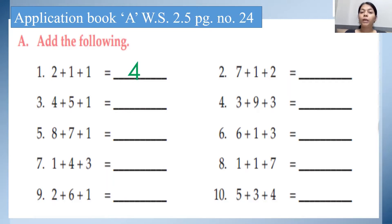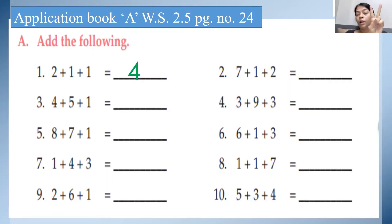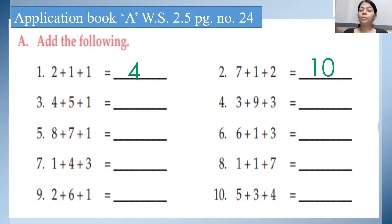See the second one: 7 plus 1 plus 2. How are we going to add it? Keep 7 in the mind, 1 on the finger. After 7, count the next number — that is 8. Now 8 in the mind, 2 on the finger. After 8: 9, 10. So what is the answer? 7 plus 1 plus 2, the answer is 10.